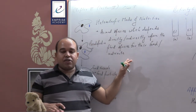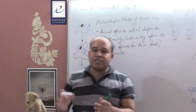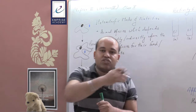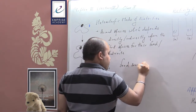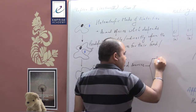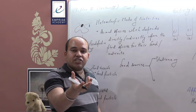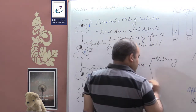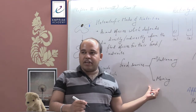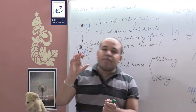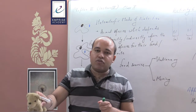Heterotrophs cannot synthesize their own food and depend upon plant species for food and nutrition. The food sources in the case of heterotrophs can be stationary — such as plant species that animals feed upon directly — or mobile, such as tertiary consumers like lion and tiger that feed upon moving prey. How food is accessed determines the feeding habits of the animal.